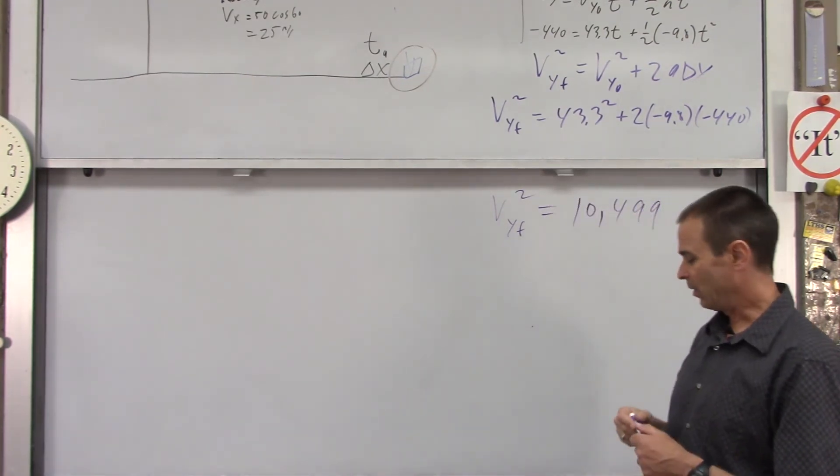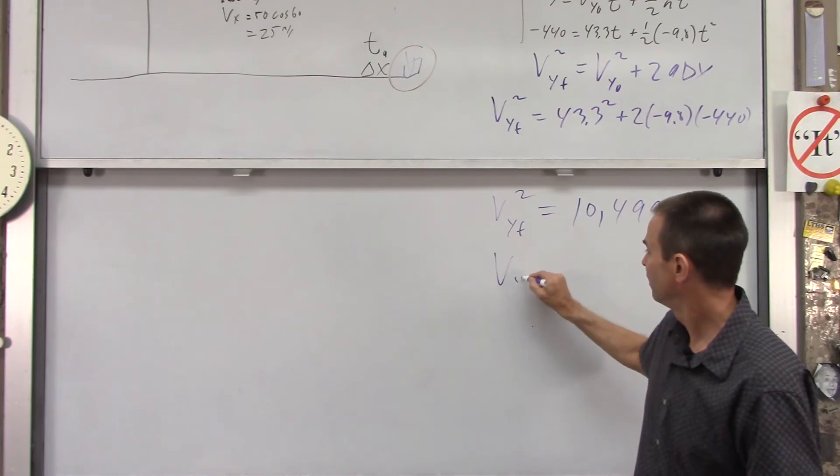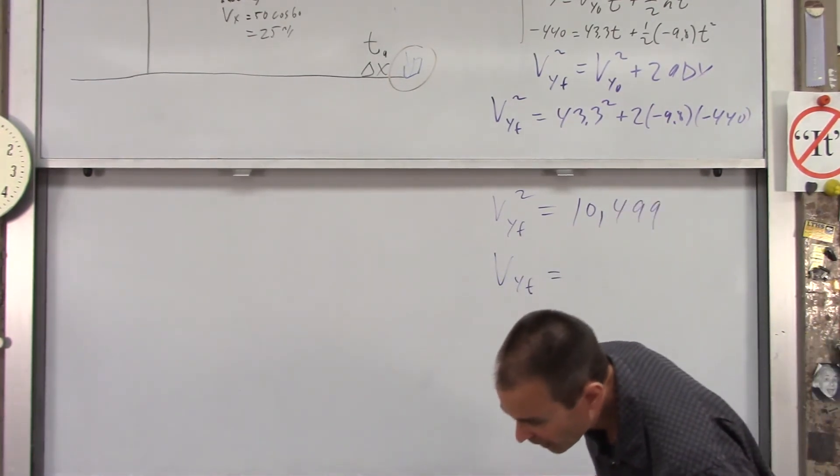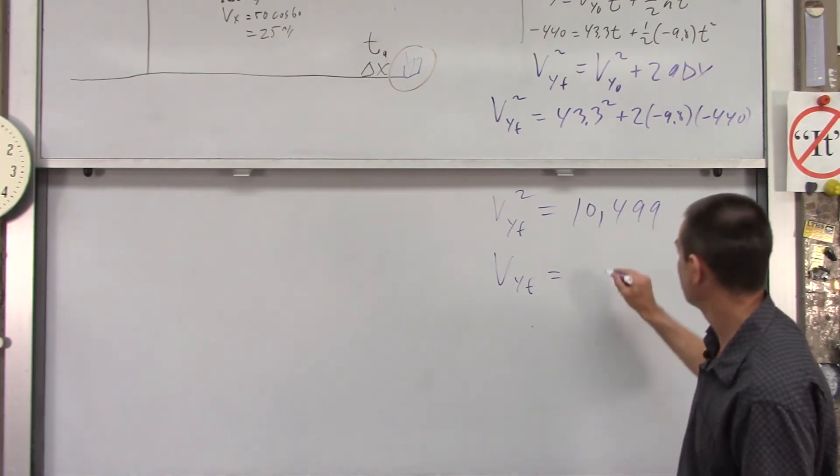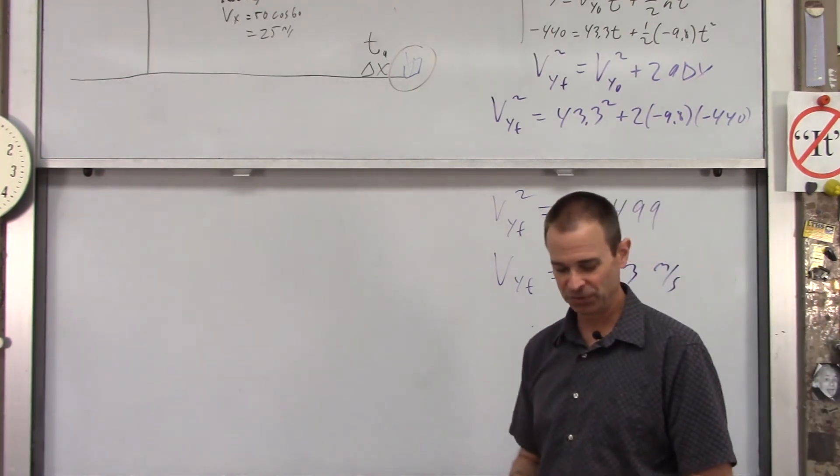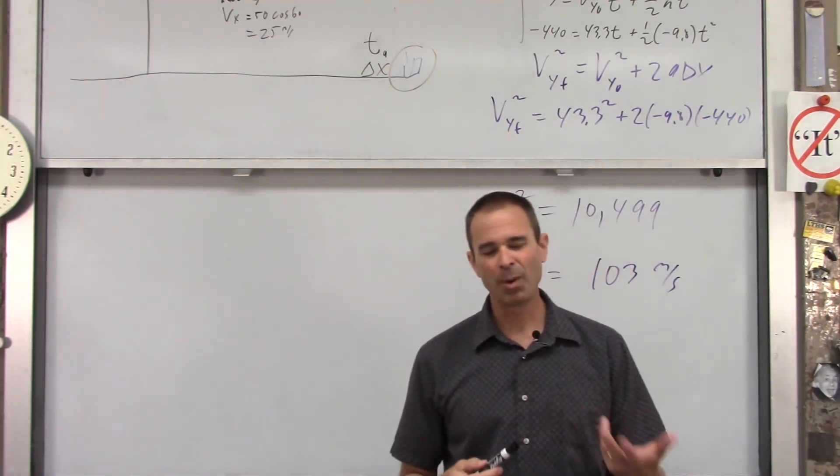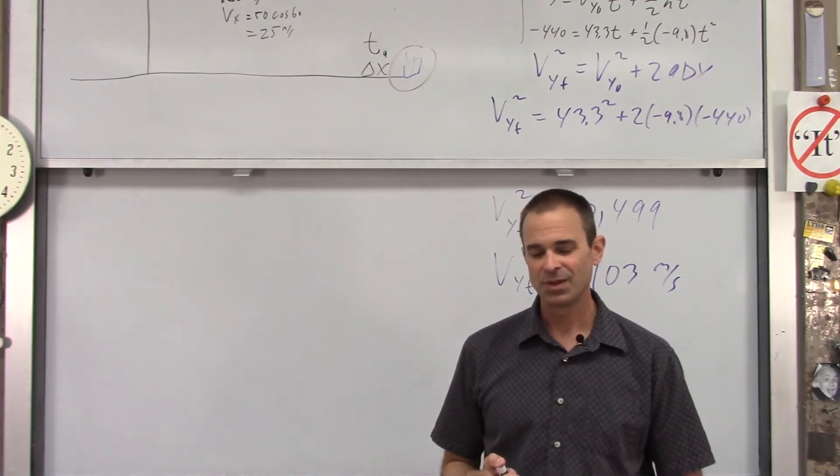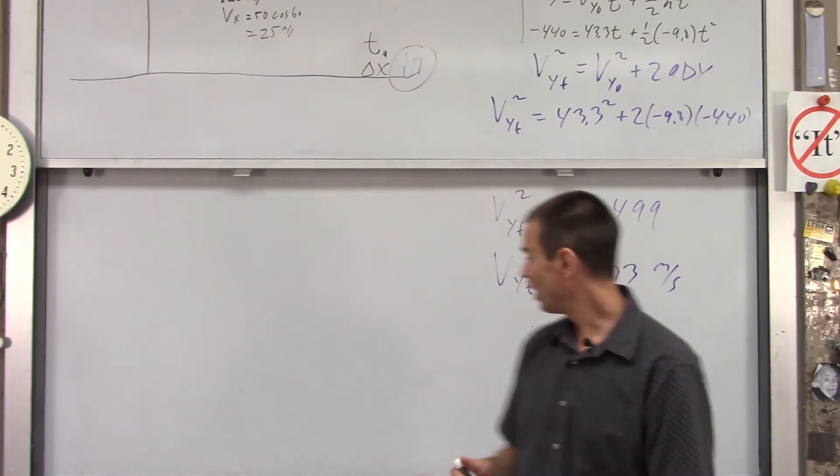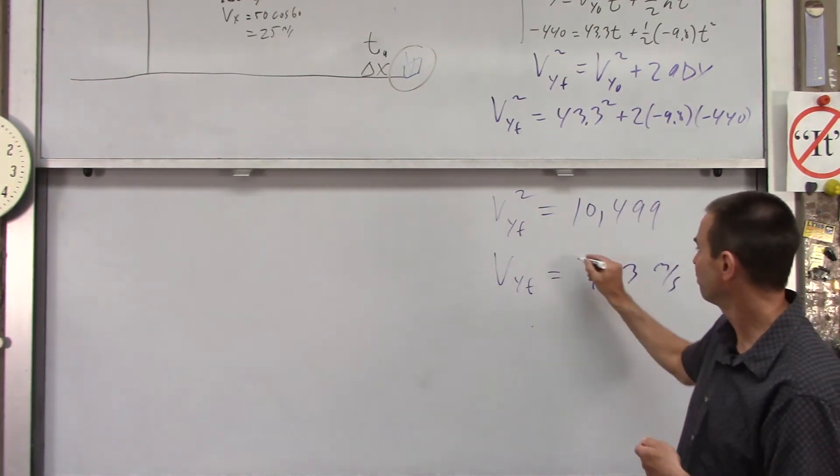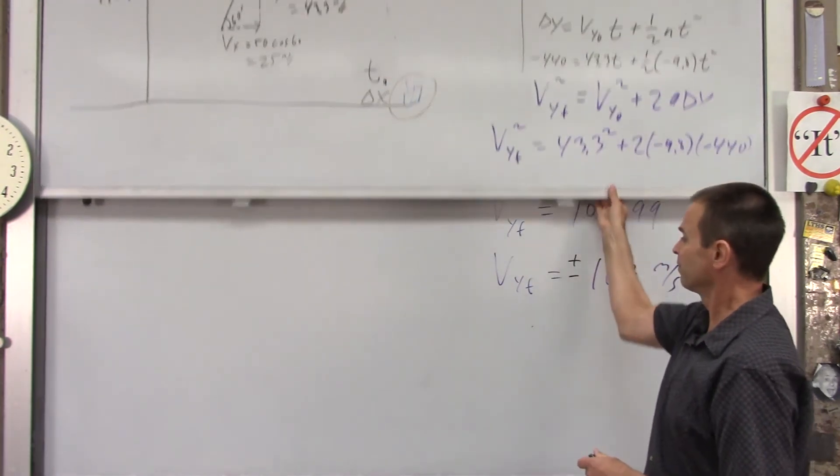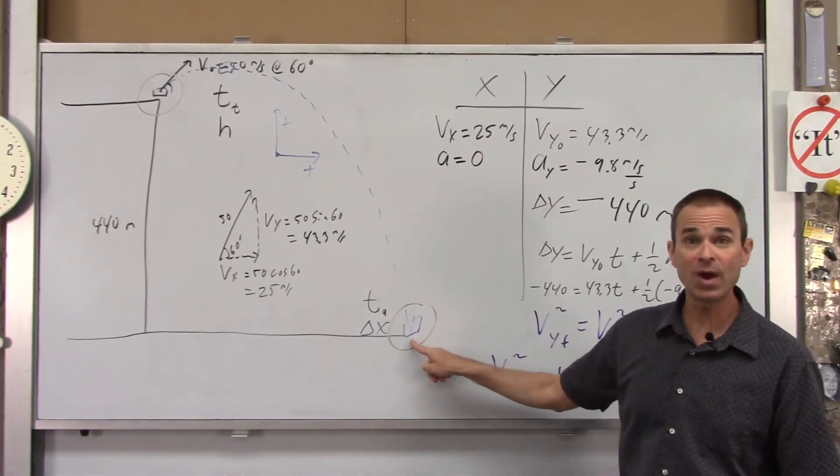You get the following. vy final squared equals, and I've got a big old number for you. When you plug those in your calculator, you get 10,499. Now, vy final is the square root of that. If you square root that, you get 103. And that's going to be meters per second. There's one issue though. You know how a moment, a little bit ago, I said what's the square root of 4? And you hopefully answered plus or minus 2. Well, what's the square root of 10,499? Well, it's either plus or minus 103.